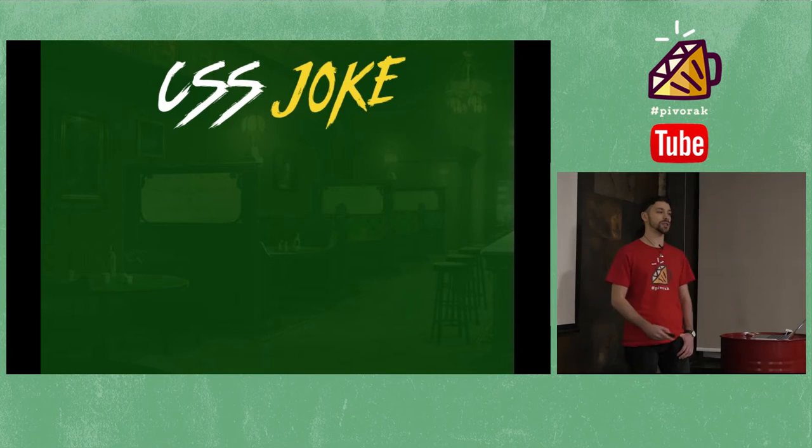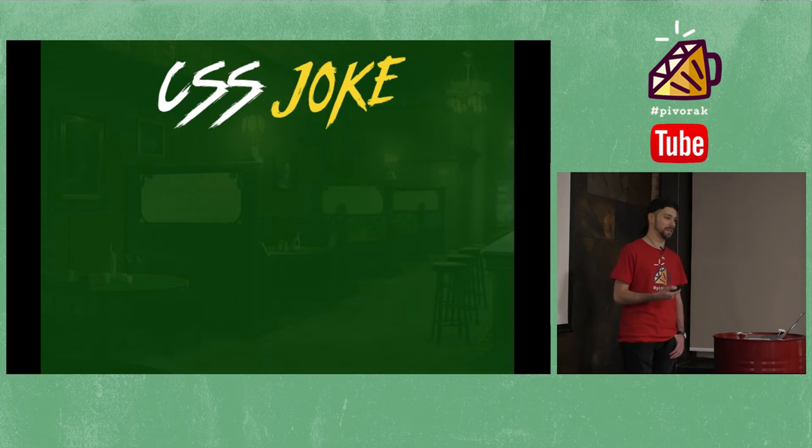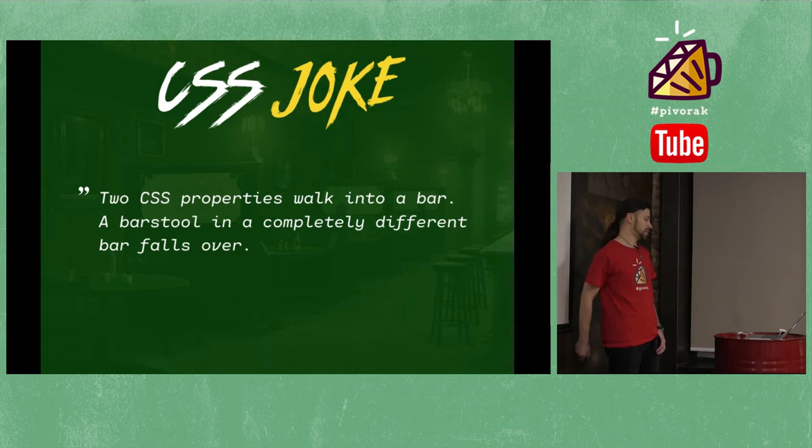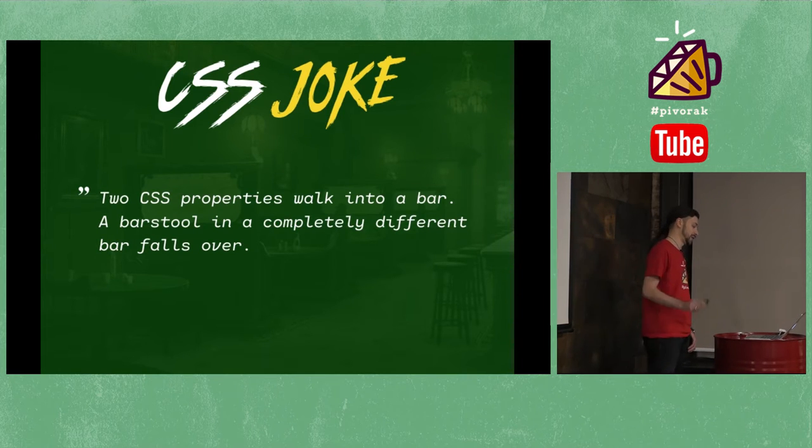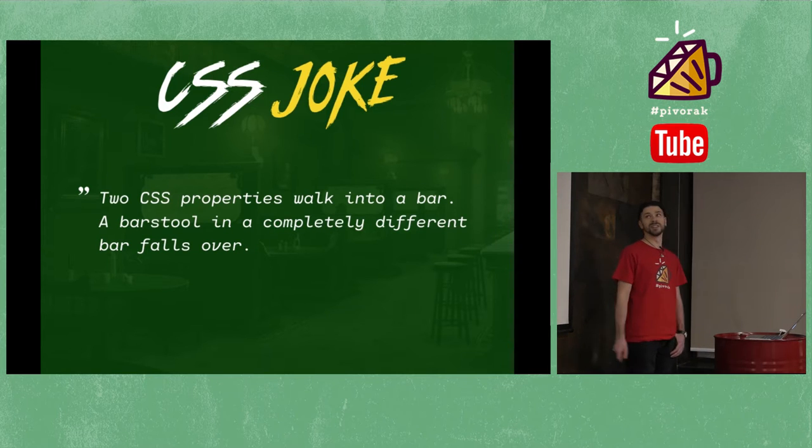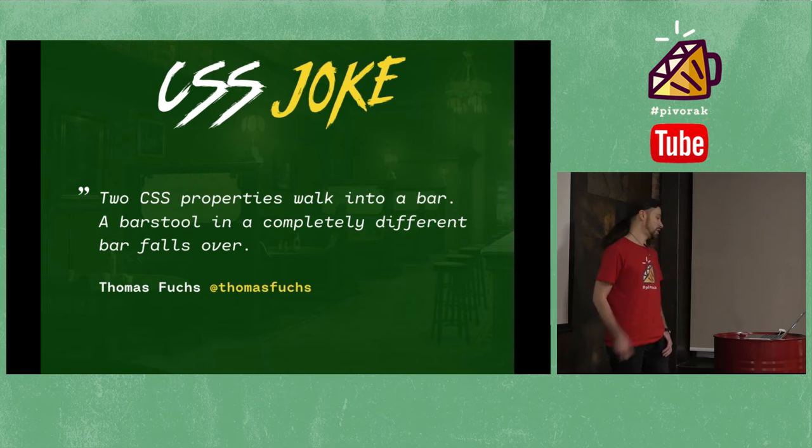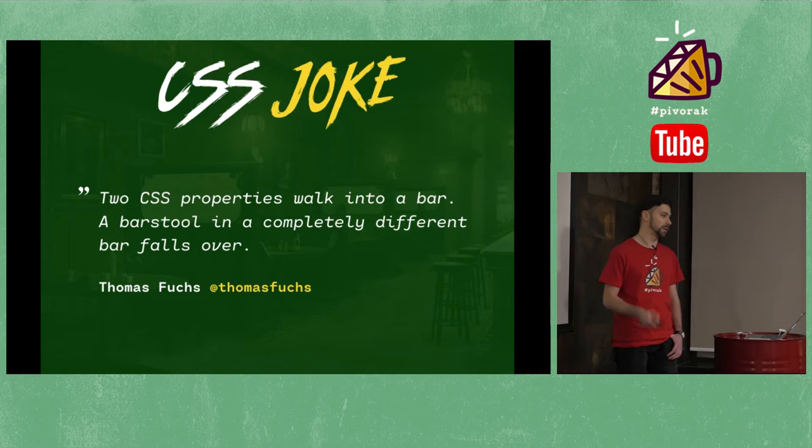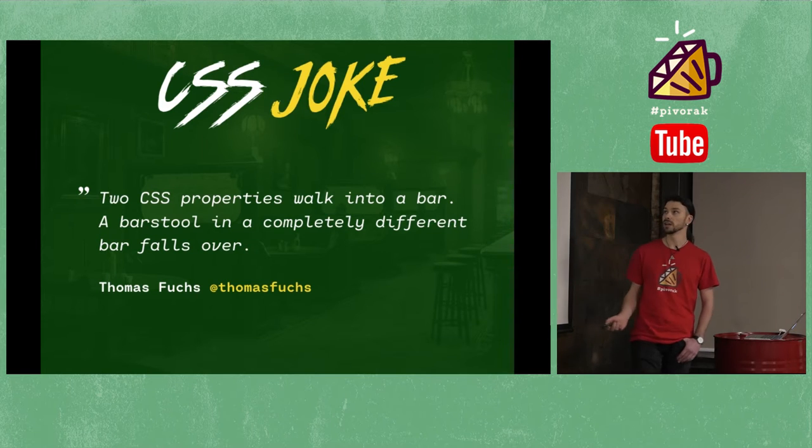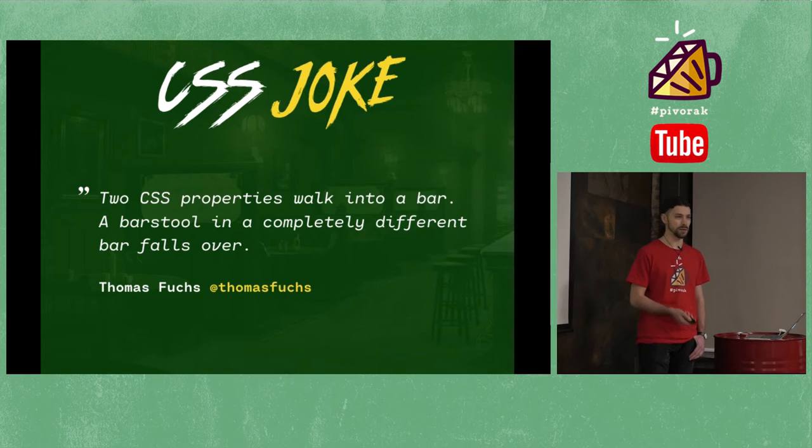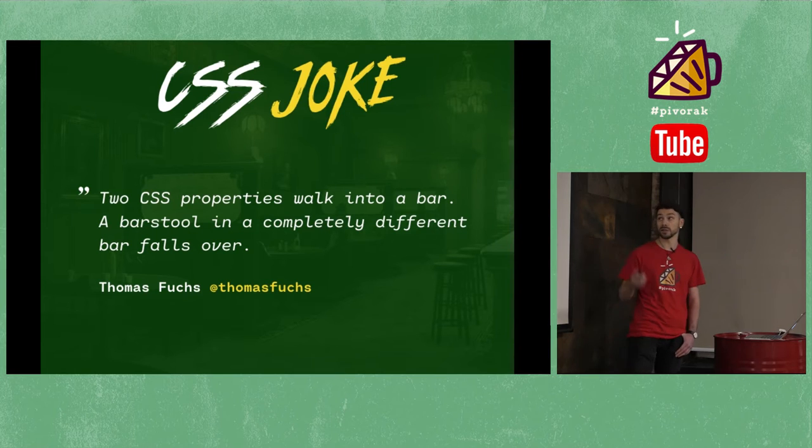But I think we should start with a joke, a really geeky joke. Two CSS properties walk into a bar, and a bar stool in a completely different bar falls over. Some people understand the joke. It's a joke by Thomas Fuchs, a member of Rails core team and developer of Scriptaculous. This was probably the first JavaScript framework for effects in Rails. He really knows what he's talking about.